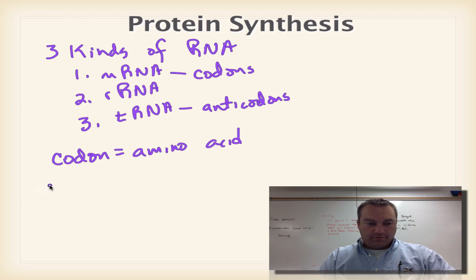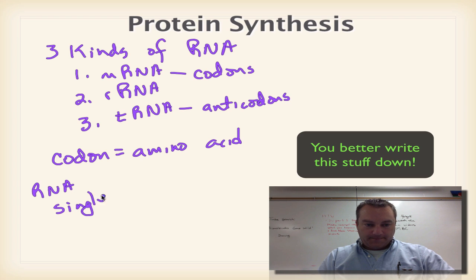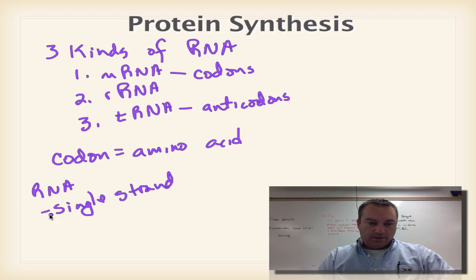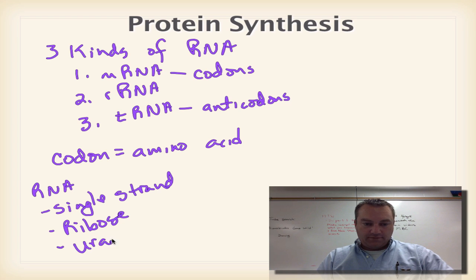We also want to go over the differences between RNA and DNA, and they're basically this. RNA has a single strand. RNA is going to have ribose instead of deoxyribose, and it's going to have uracil instead of thymine.